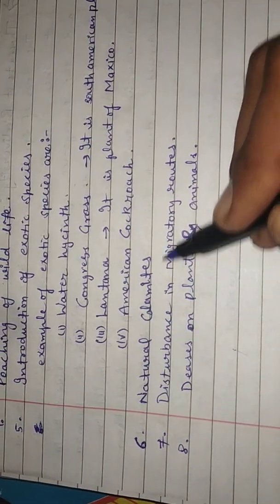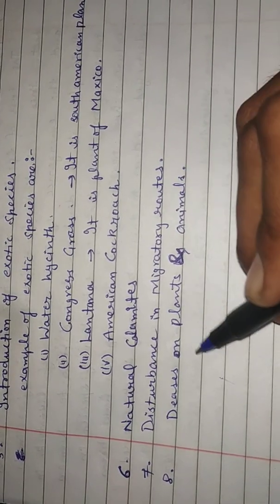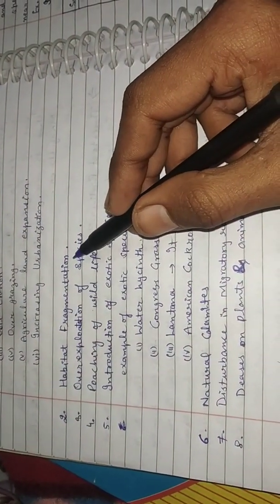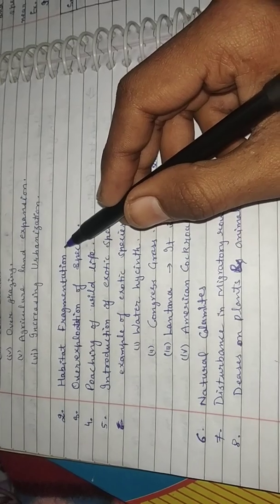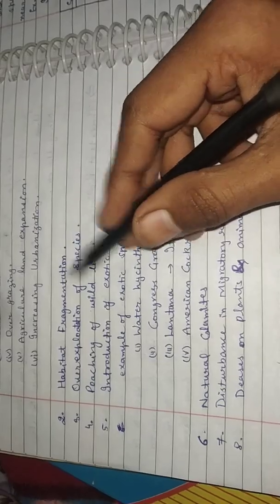And natural climates, industry events in migratory routes, and disease on plants and animals. I write these all diseases only in single lines. You all know very well about these friends. You can explain briefly all these.